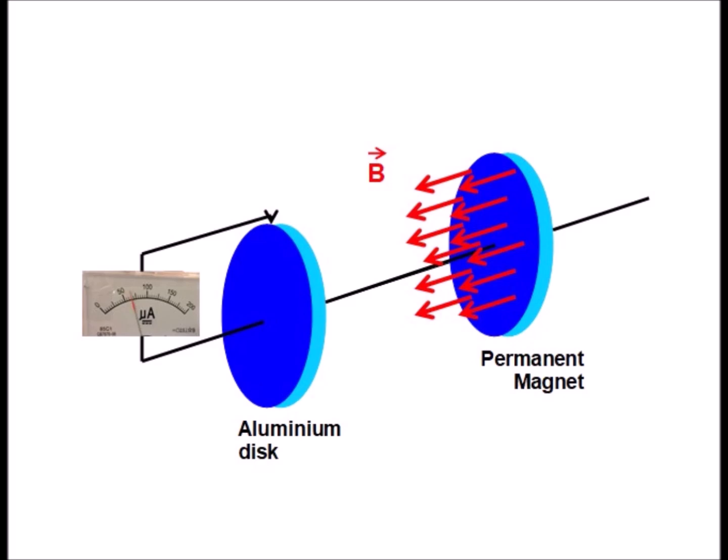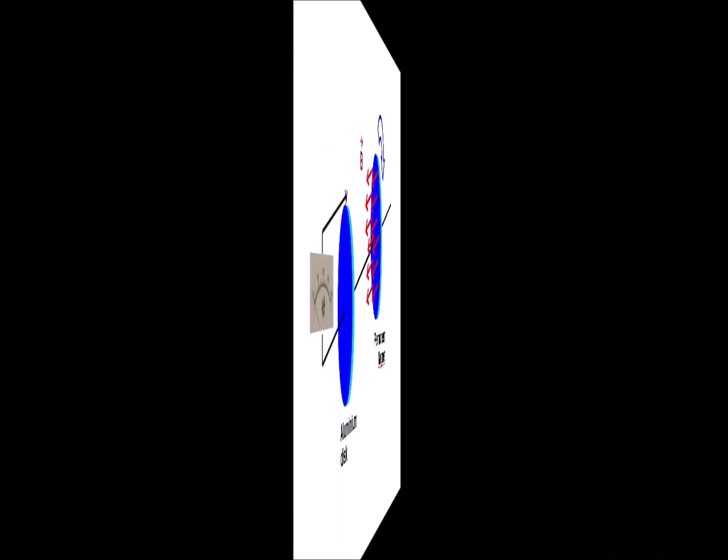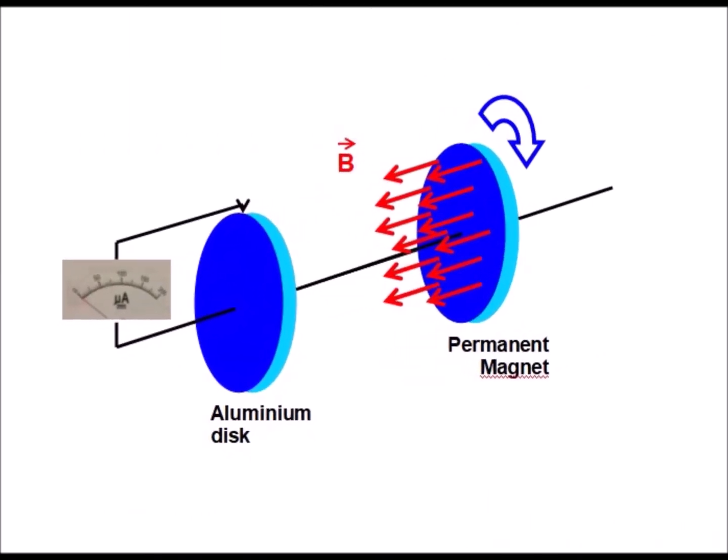A conductive disk is placed in the magnetic field of a magnet. A brush makes it possible to collect the current at the periphery of the disk. When the magnet rotates while the conductive disk is stationary, no current is detected in the disk.